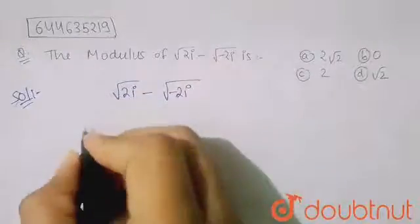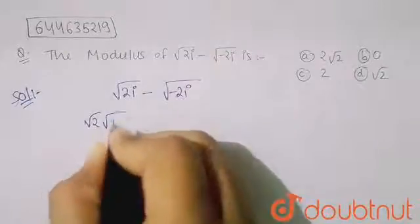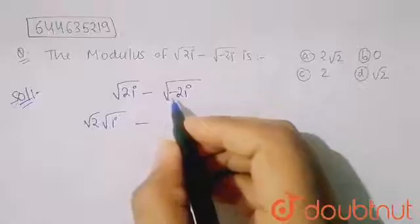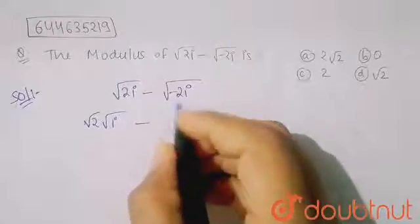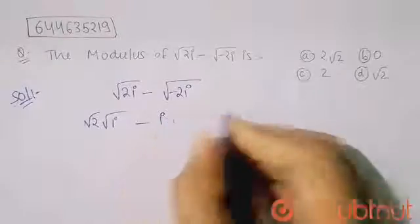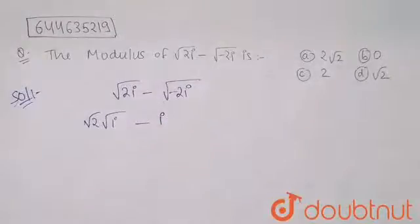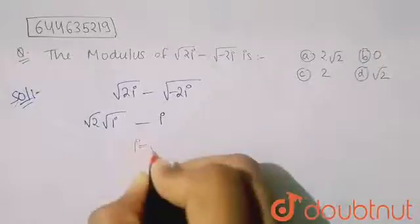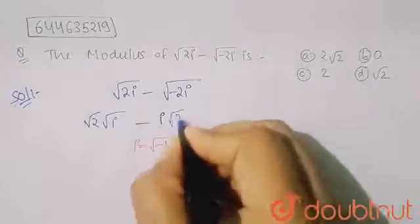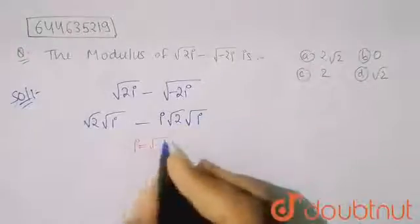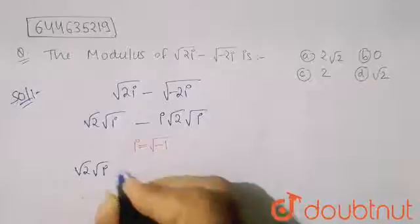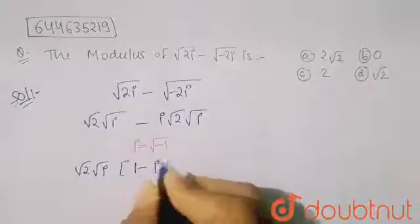This can be written as √2 · √i minus, taking √2 common from the second term and noting that √(−1) = i, we get √2 · √i · (1 − i). Take this as equation 1.